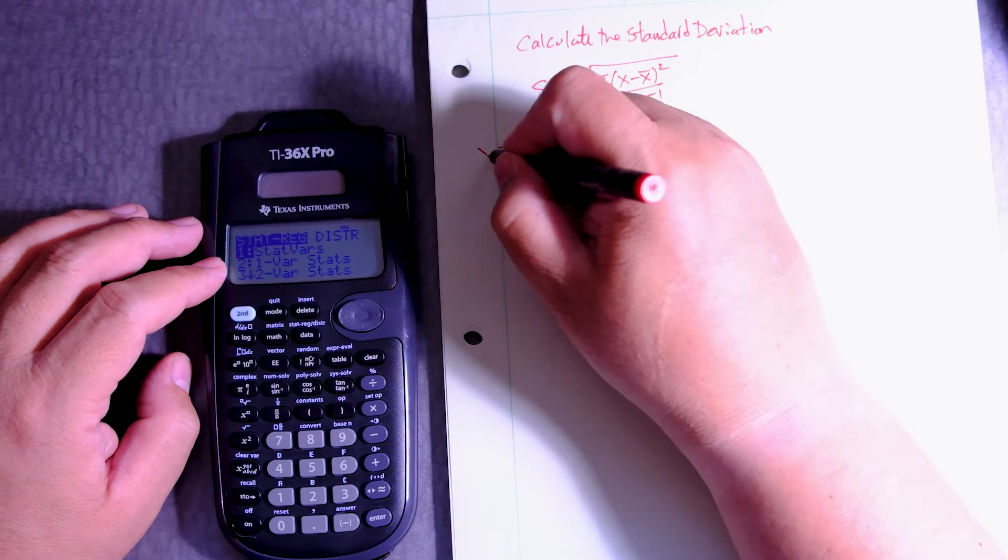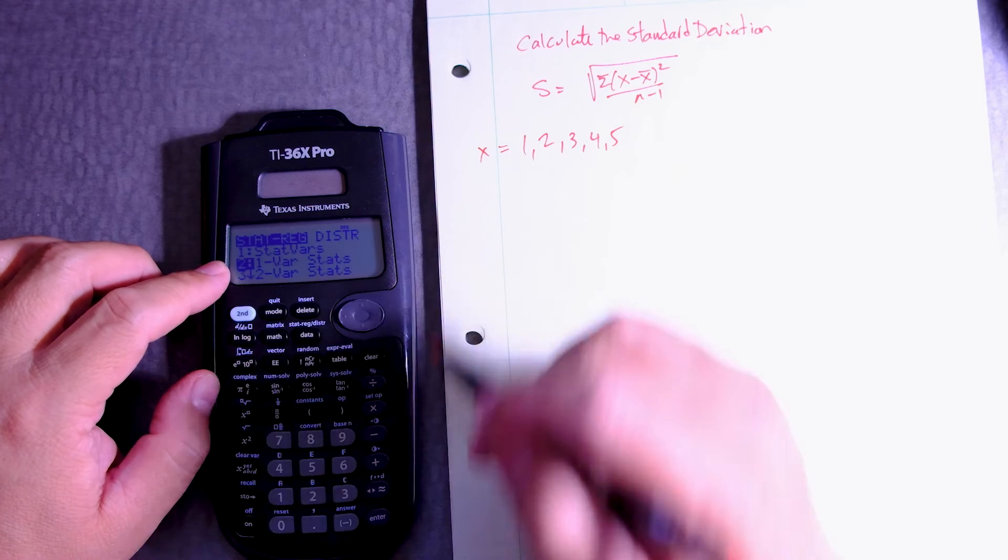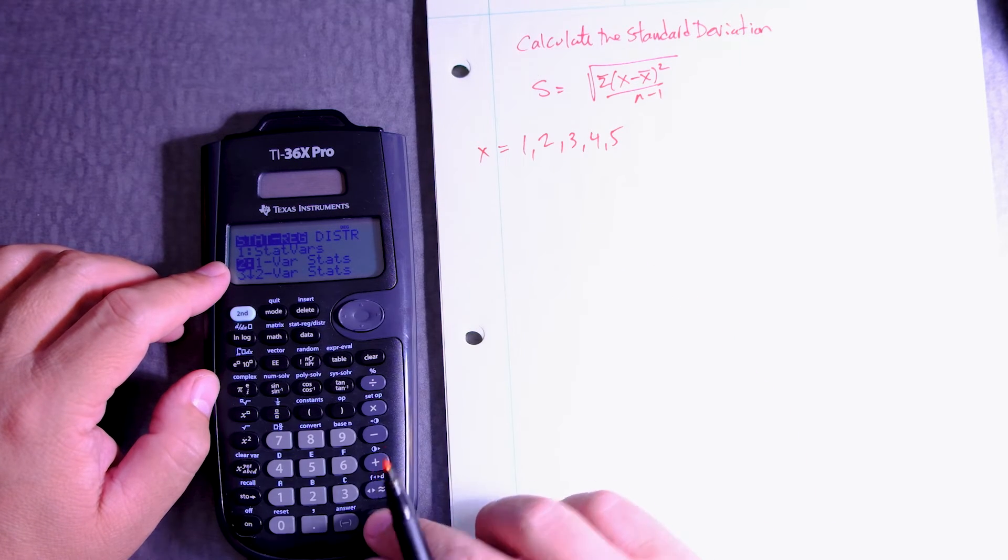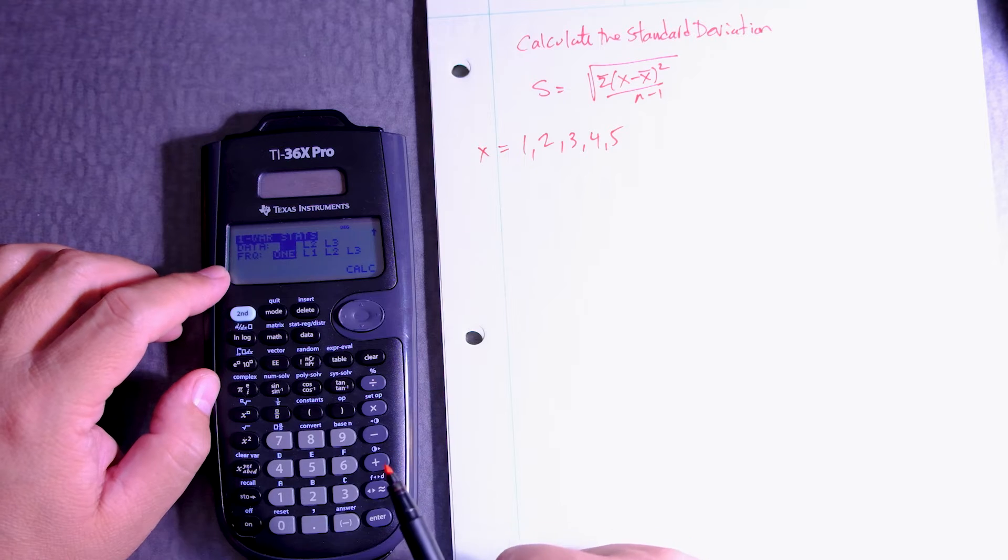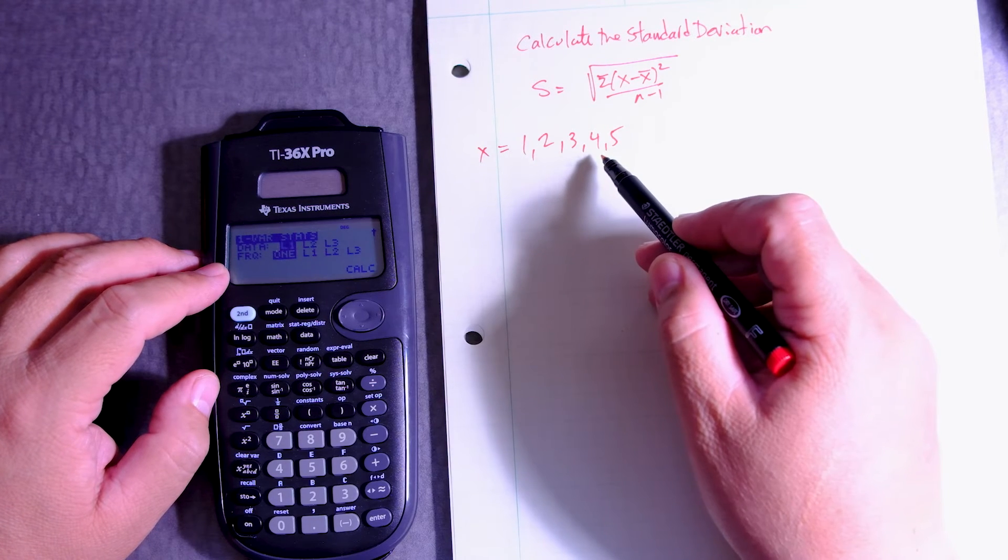Now, you got to remember that this is one variable. So I go over here. One variable, statistics. Enter. I use this D pad. And then L1 is my data. Okay, my list.